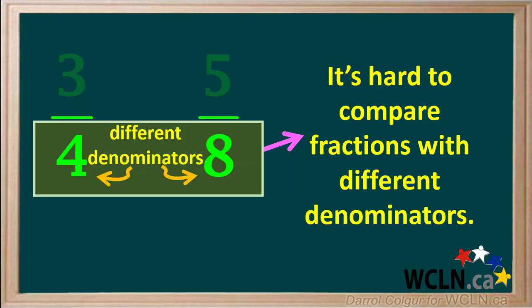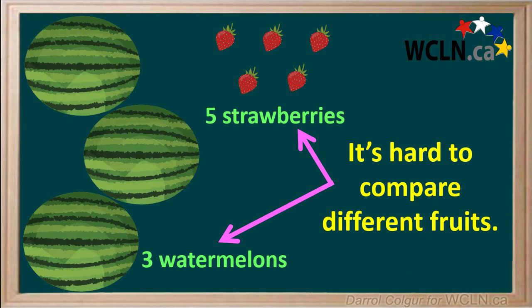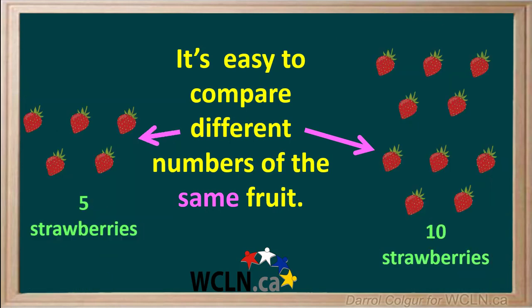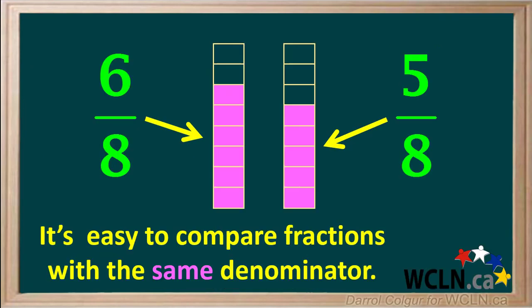So as you can see, it's hard to compare fractions with different denominators, just like it's hard to compare numbers of different fruits. But it's easy to compare different numbers of the same fruit. 2 watermelons is obviously less than 3 watermelons, and 5 strawberries is less than 10 strawberries. Just like comparing the same fruits, it's also easy to compare fractions with the same denominator. Here we're comparing eighths. We see for example that 6 eighths is larger than 5 eighths.